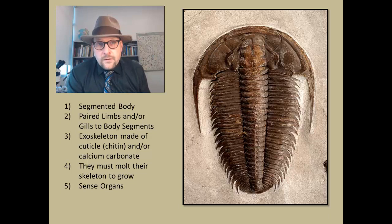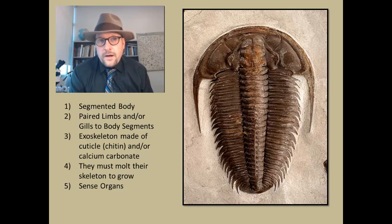And fifth, the final character of arthropods, is that they have sense organs. They have things like eyes and even have a small brain and nerve fibers that run through a central nervous system. So this is the first real group that we have that has pretty complicated, actually very complicated sense organs. All of these characters are found within all arthropods.